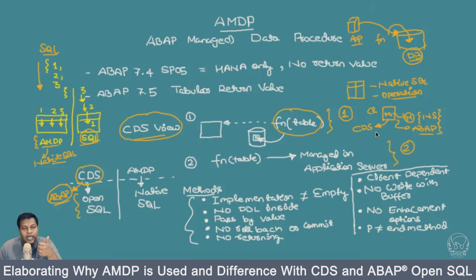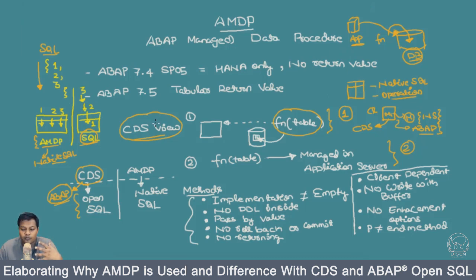To summarize the advantages of using AMDP: the first is how you can manage your objects inside the application layer — it is part of the BAP repository to transport changes or development artifacts. The second is how the code or structure of the CDS view, when using tabular functions with complex logic, can go and sit inside the database.